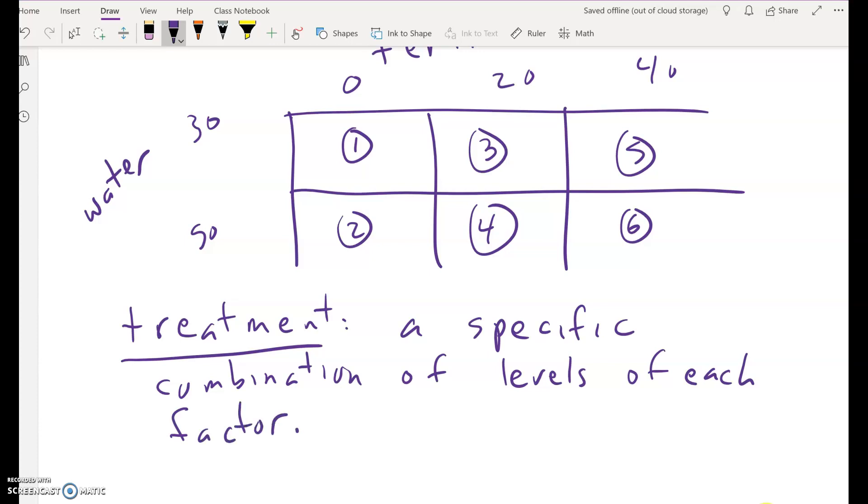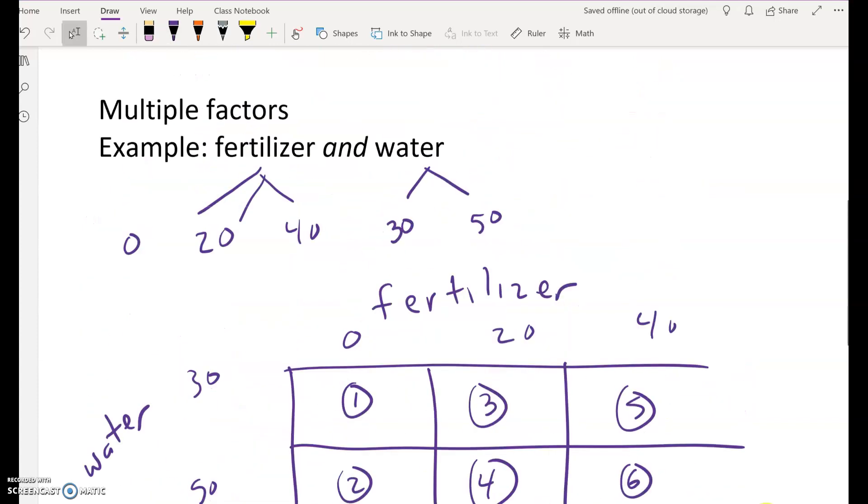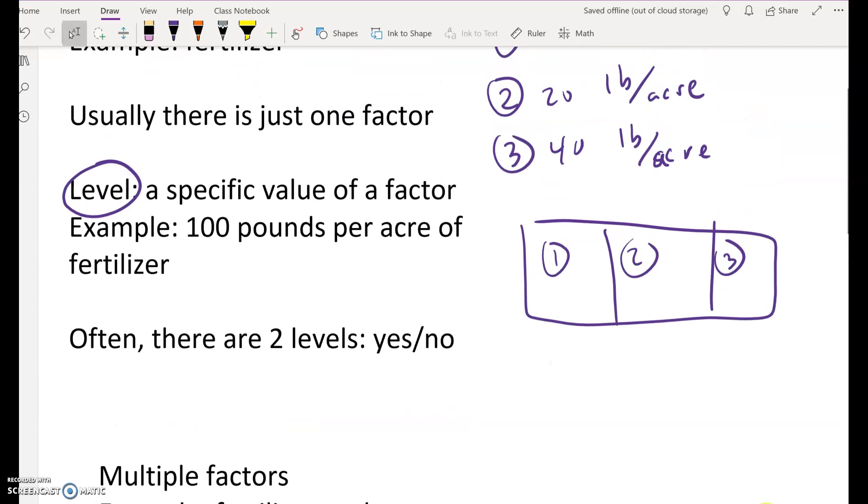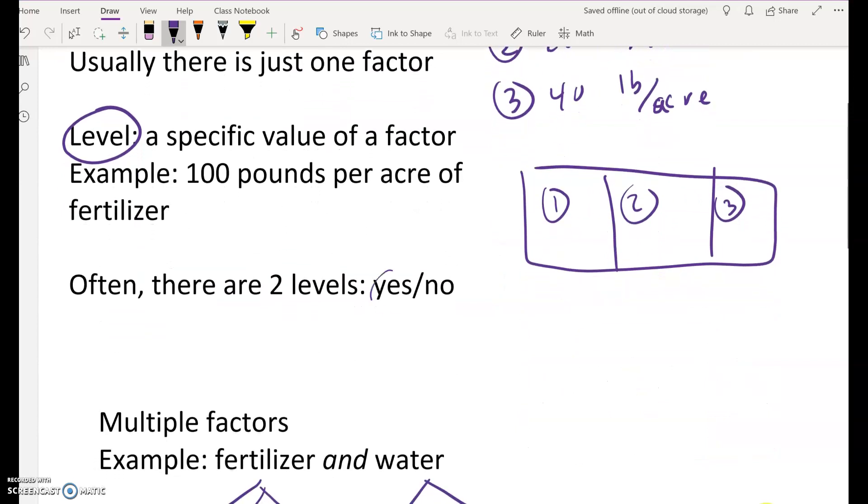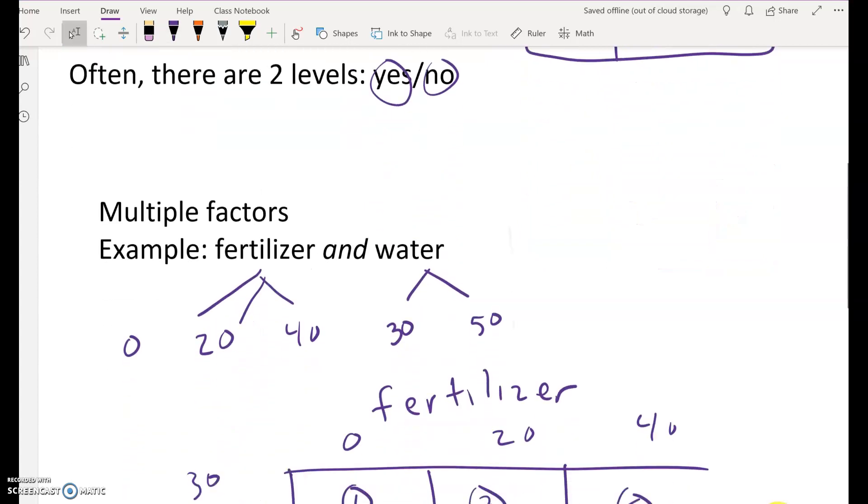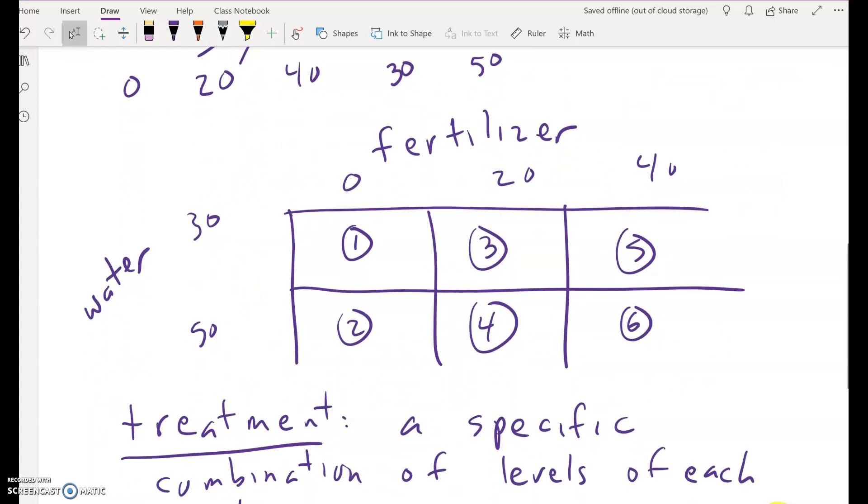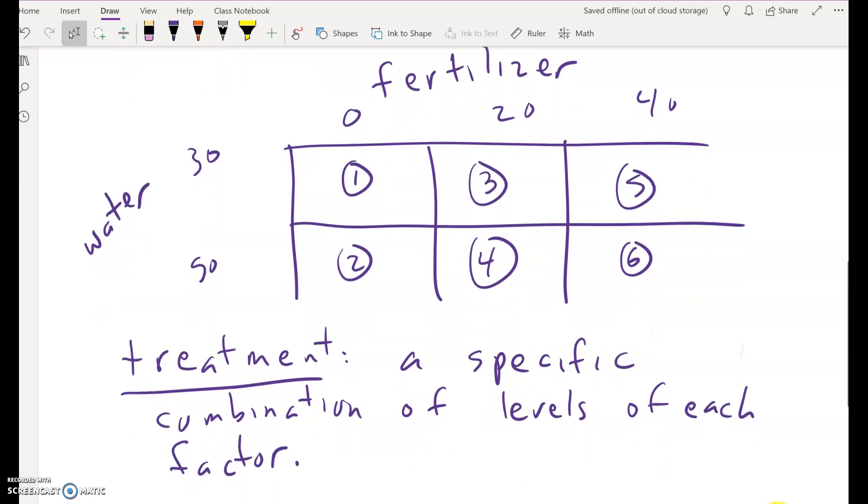Okay, so the example I just gave, we have six treatments all together. Now, in many cases, you have just two treatments. You have just one factor, like medication, with just two levels, the medication or a placebo, and that's it, in very simple designs. But you can have multiple factors with several levels and so on. And that's it for factors, levels, and treatments.